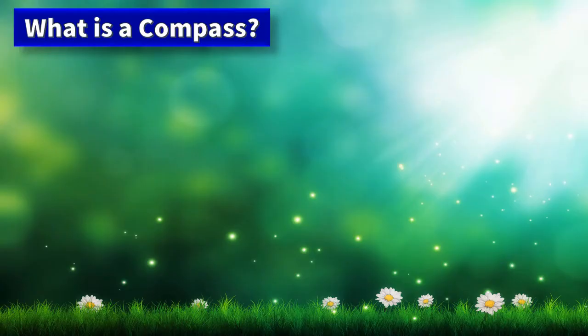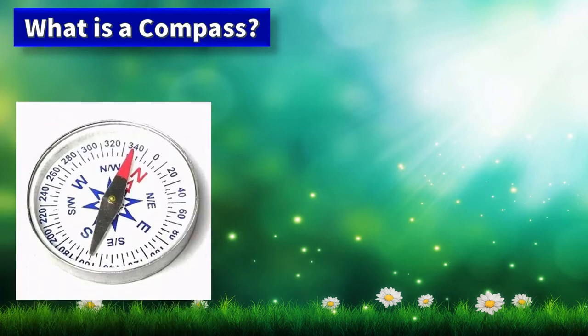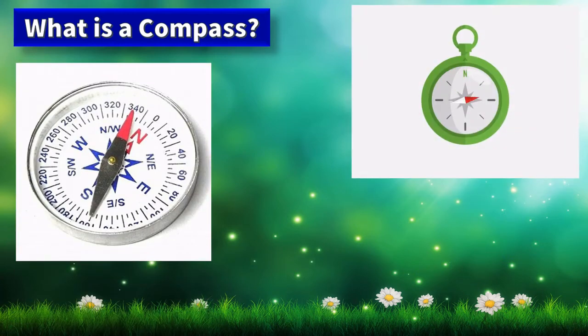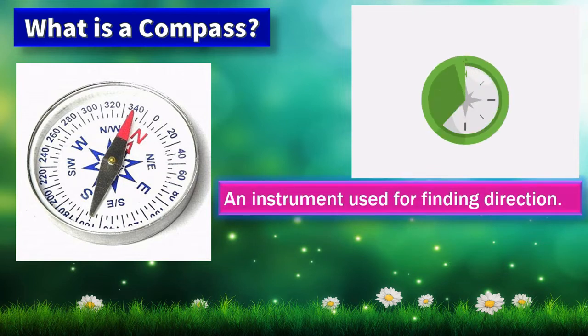The Sun helps us find directions during daytime. But what do we do if we want to find a direction during night time? We use a compass. A compass is an instrument used for finding directions, and the compass needle always points towards the North direction.